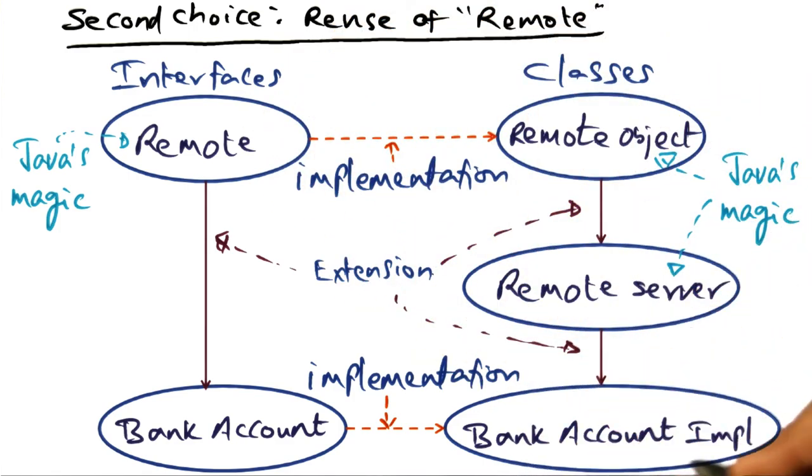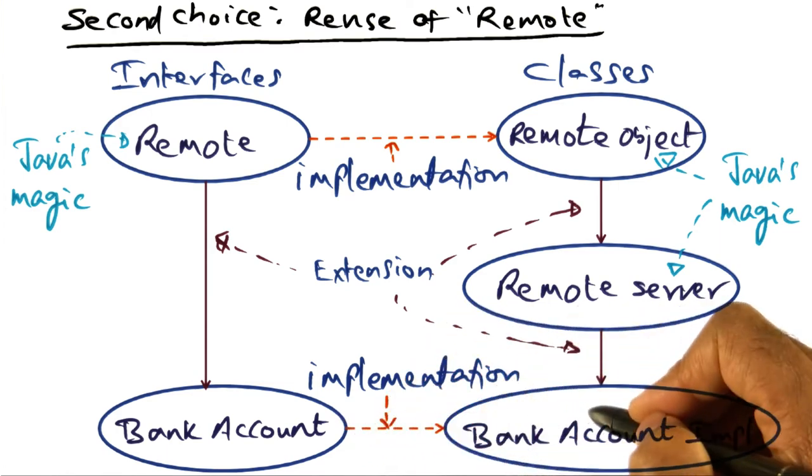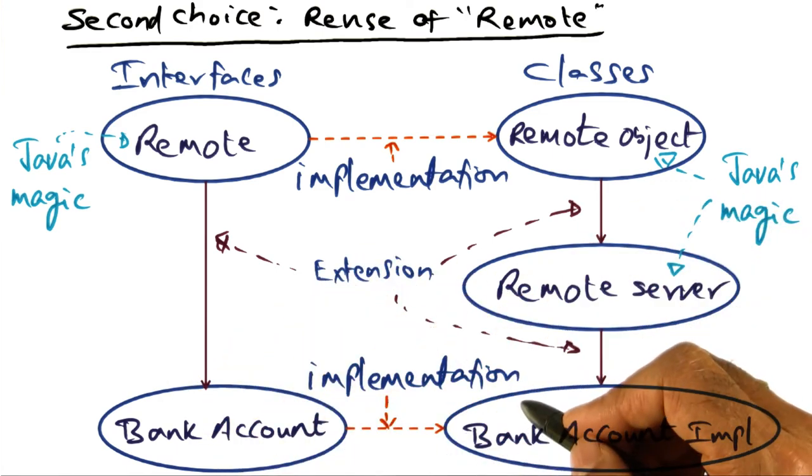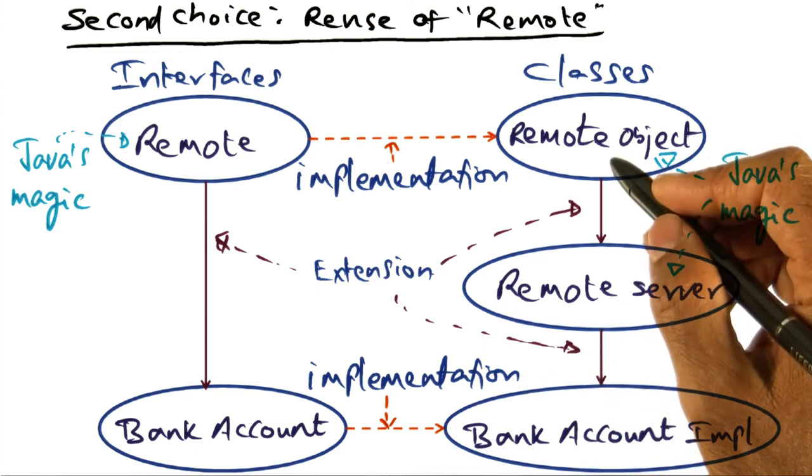when the bank account implementation object is instantiated, the server becomes instantly visible, magically visible to remote clients through the Java runtime system. That's the power of the distributed object model of Java.